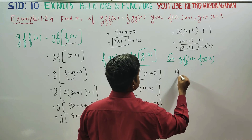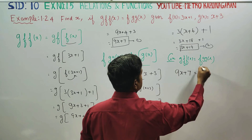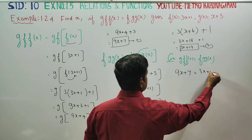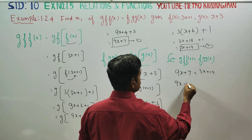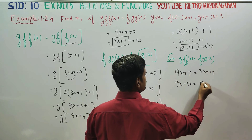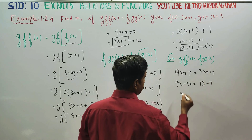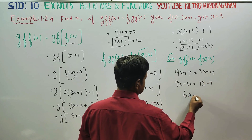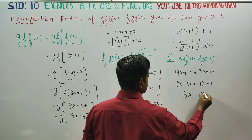9x plus 7. The answer is 3x plus 19. It is given: 9x minus 3x is equal to 19 minus 7. The answer is 6x. 19 minus 7 gives 12.